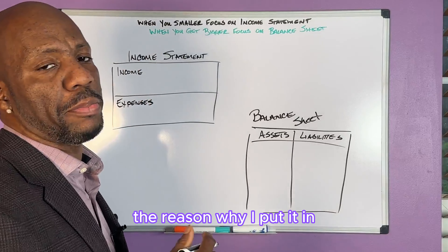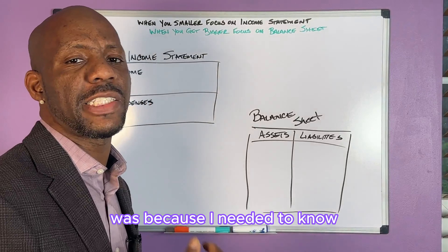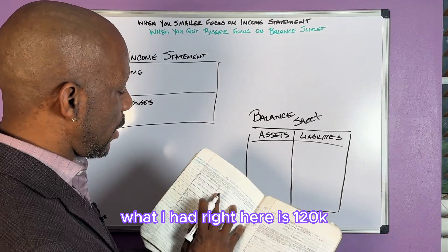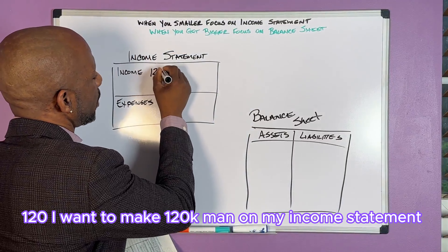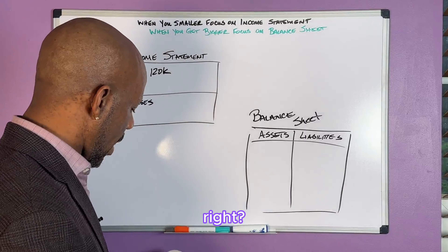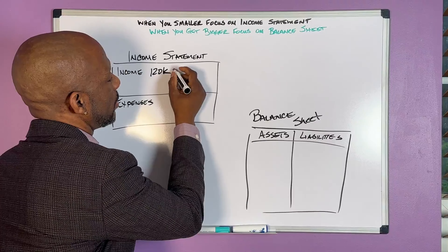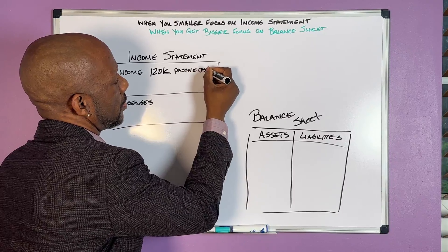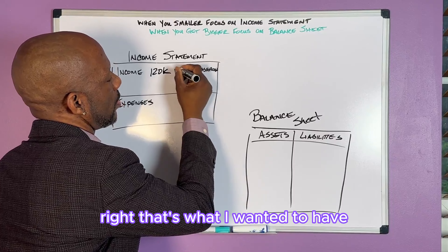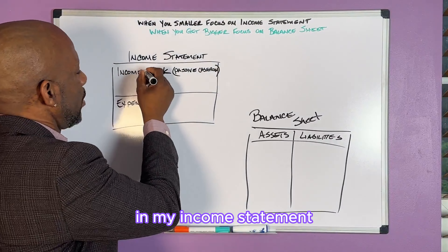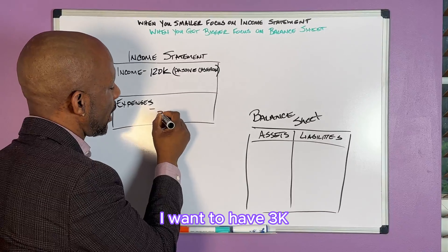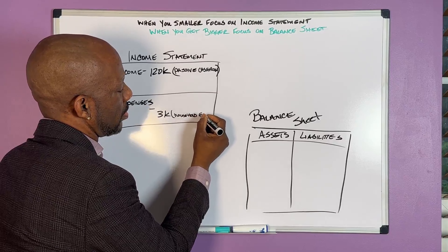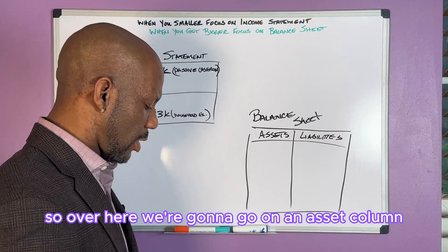It was so important for me to have this because I needed to know what I wanted on each sheet. I said, 'What I want right here is 120k' — I wanted to make 120k on my income statement, and I wanted to have some passive cash flow. That's what I wanted to have in my income statement.